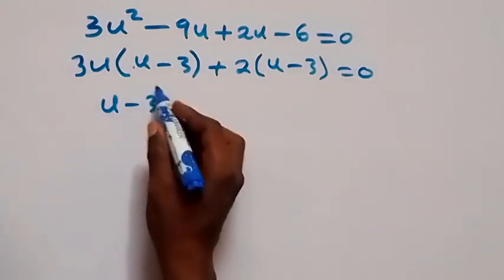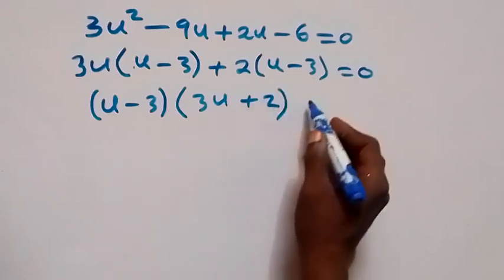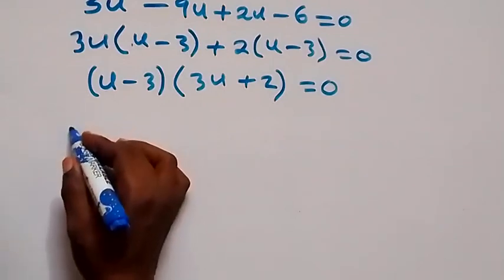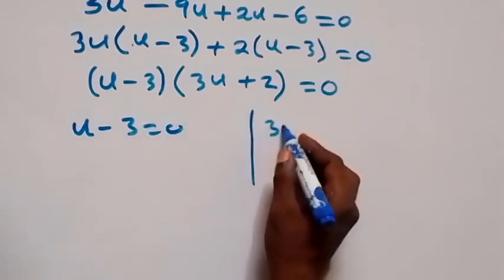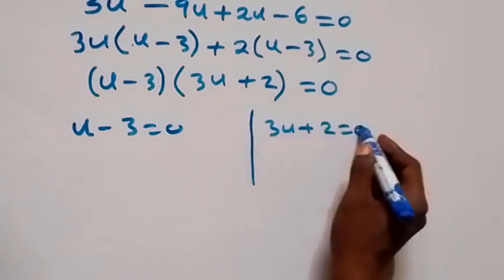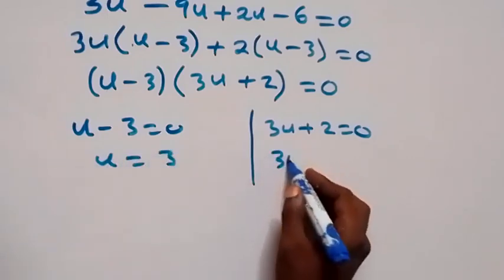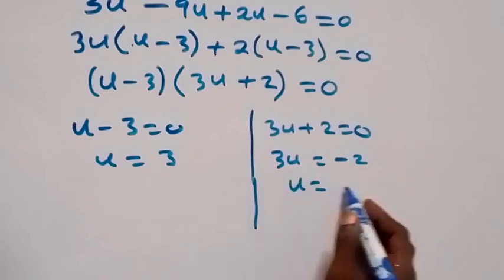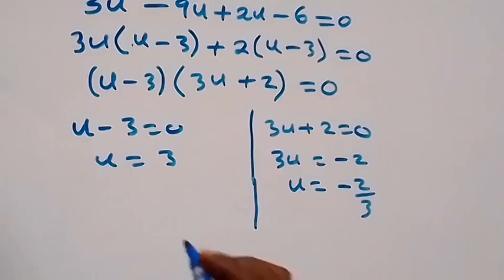We have (u minus 3) as the common factor, so factoring it out gives (u minus 3)(3u plus 2) equals 0. From here, u minus 3 equals 0 gives u equals 3, and 3u plus 2 equals 0 gives 3u equals minus 2, so u equals minus 2 over 3.